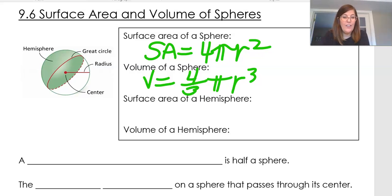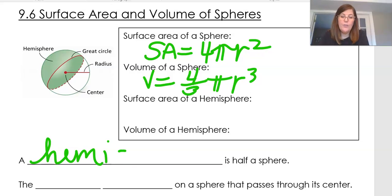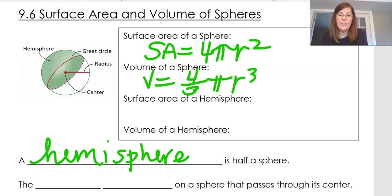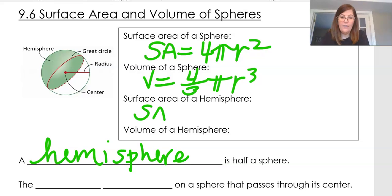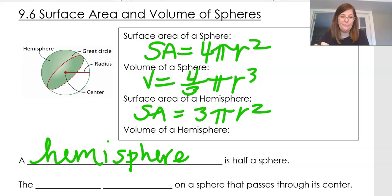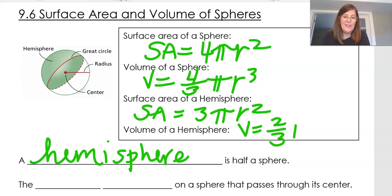If I want to find the surface area of a hemisphere — first of all, what is a hemisphere? A hemisphere is half of a sphere, just the green part shown here. The surface area of a hemisphere formula is 3 pi r squared. And the volume of a hemisphere is 2/3 pi r cubed.